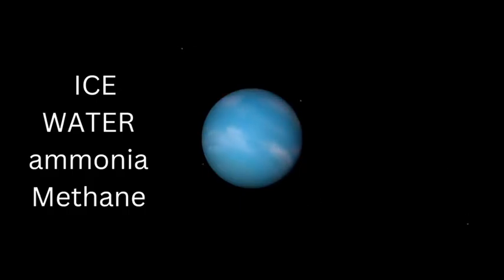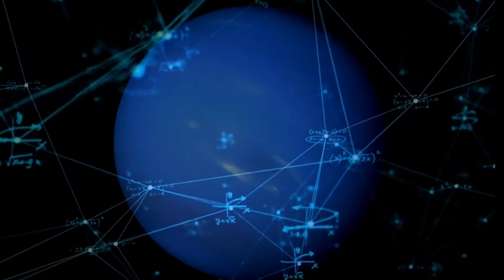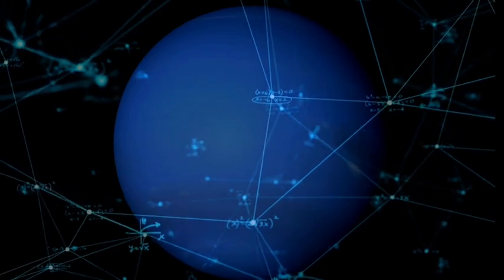Neptune's rocky core is surrounded by a mixture of water ice, ammonia and methane. The ice giant Neptune was the first planet to be discovered based on mathematical calculations.